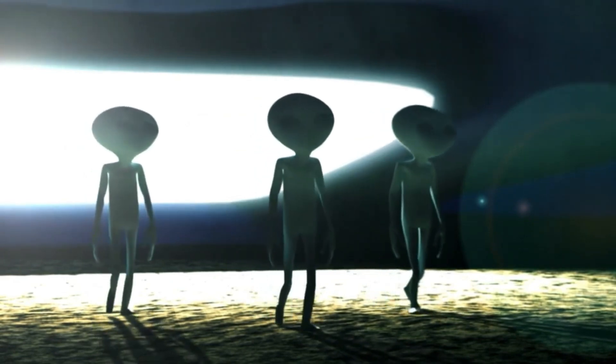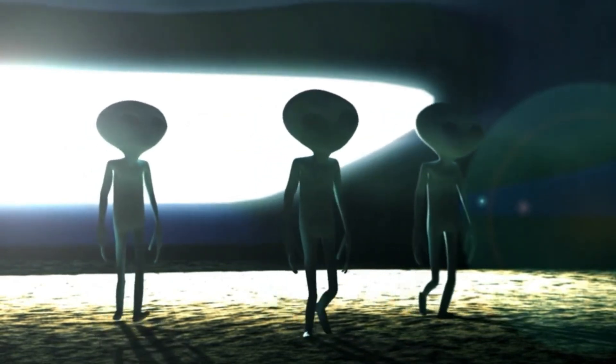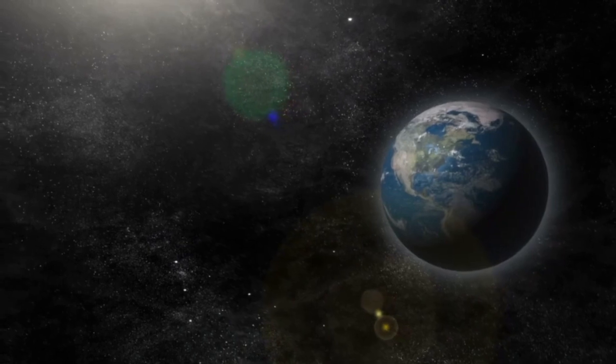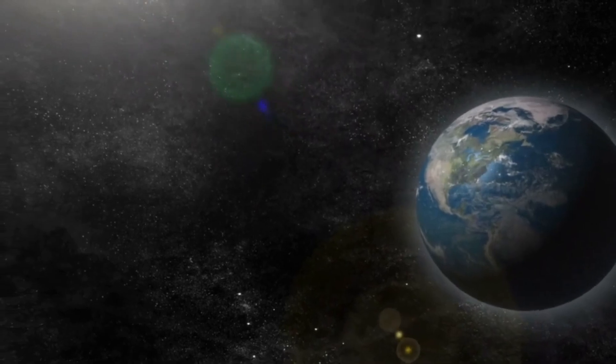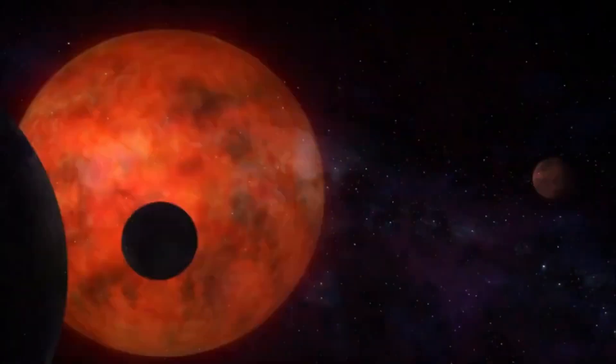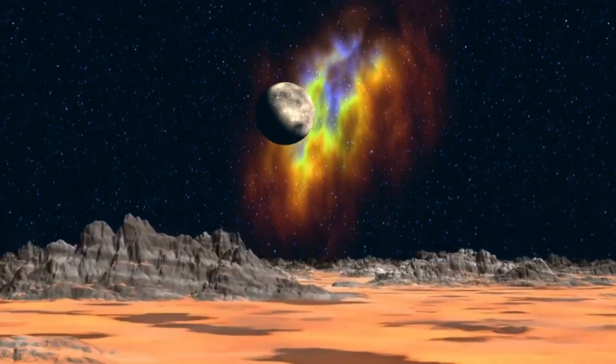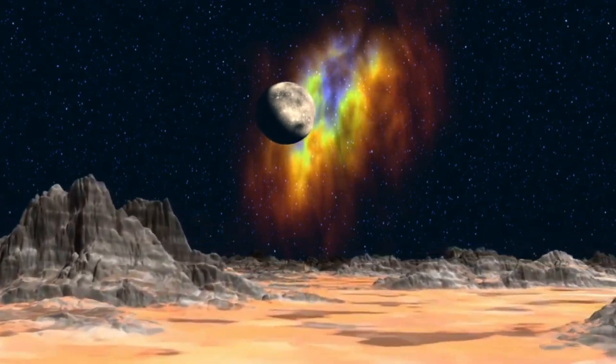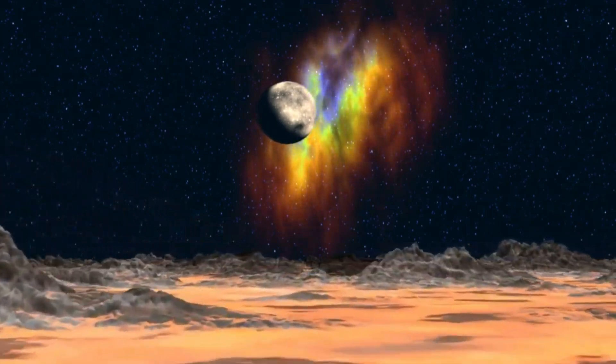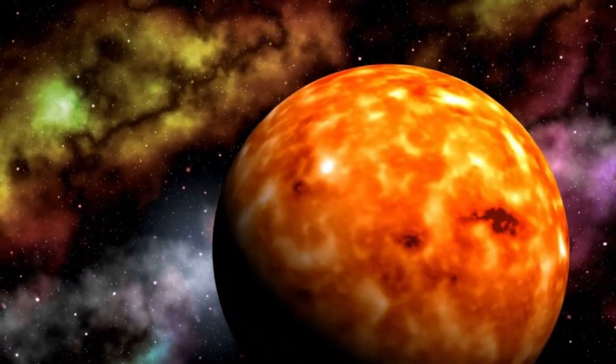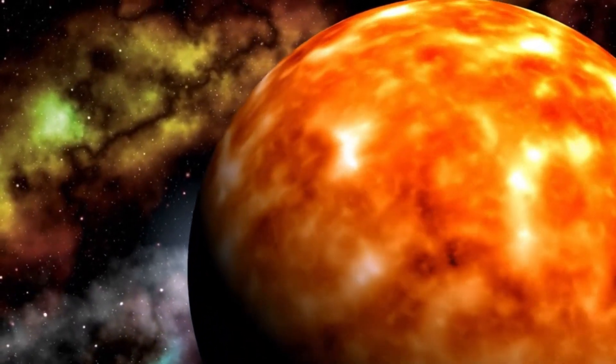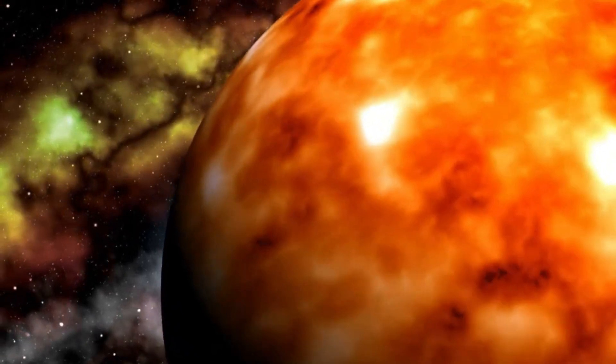The situation is further complicated by the nature of Proxima Centauri itself. Red dwarf stars like Proxima Centauri are much smaller and cooler than our Sun, and their magnetic fields are far more intense. This results in powerful solar flares and bursts of radiation which are much stronger than what Earth experiences from the Sun. For planets like Proxima B which lie close to their host stars, this radiation could be a significant barrier to life. The intense solar wind and the frequent bursts of radiation could strip away any atmosphere that might exist on the planet, rendering it even less hospitable.